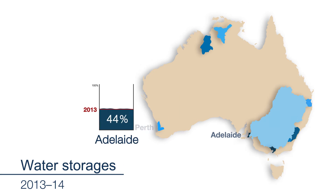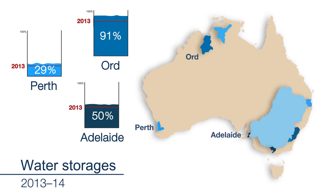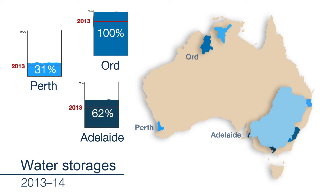The Adelaide, Perth and Ord regions fared better, with near to above average rainfalls. Storage volumes in these regions increased during the year, particularly in the Ord region where storages were 100% full.